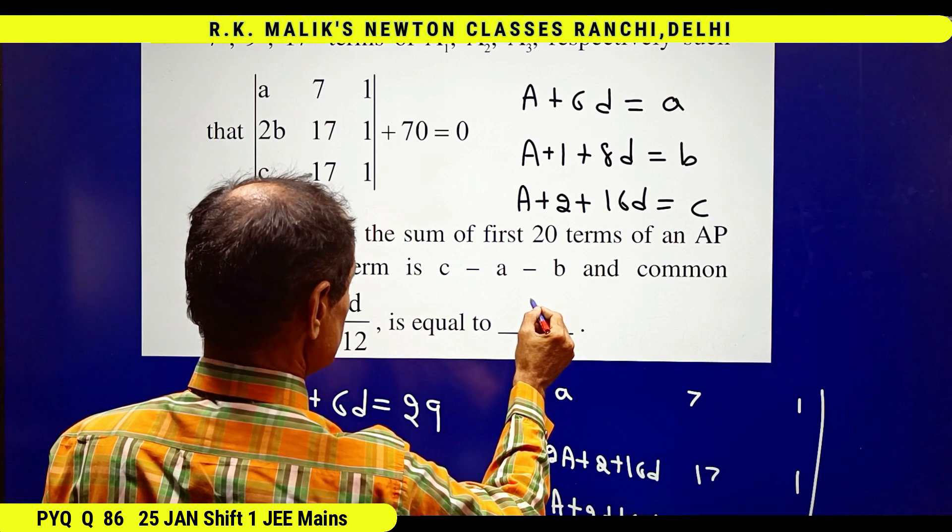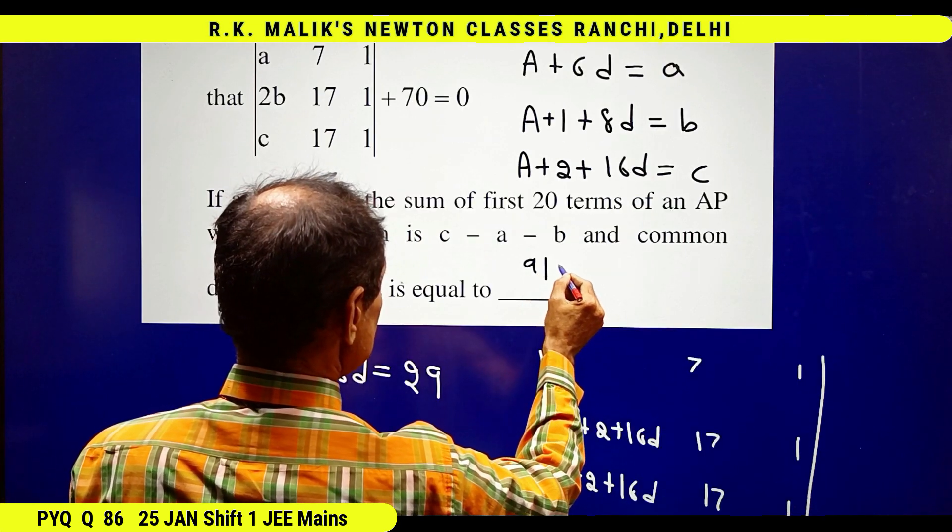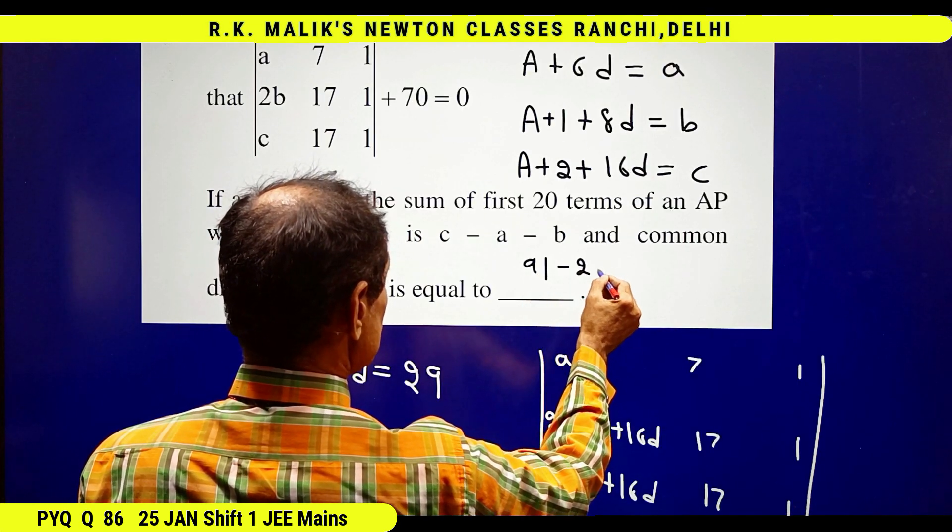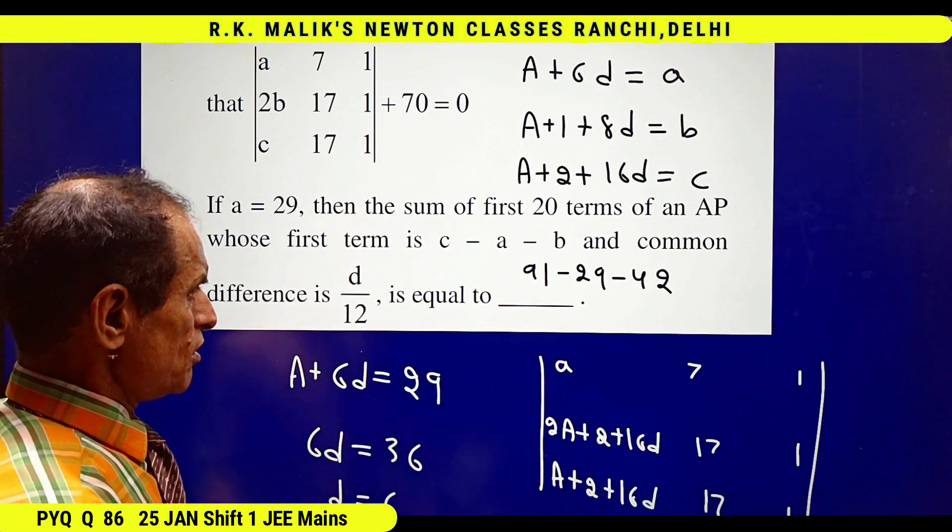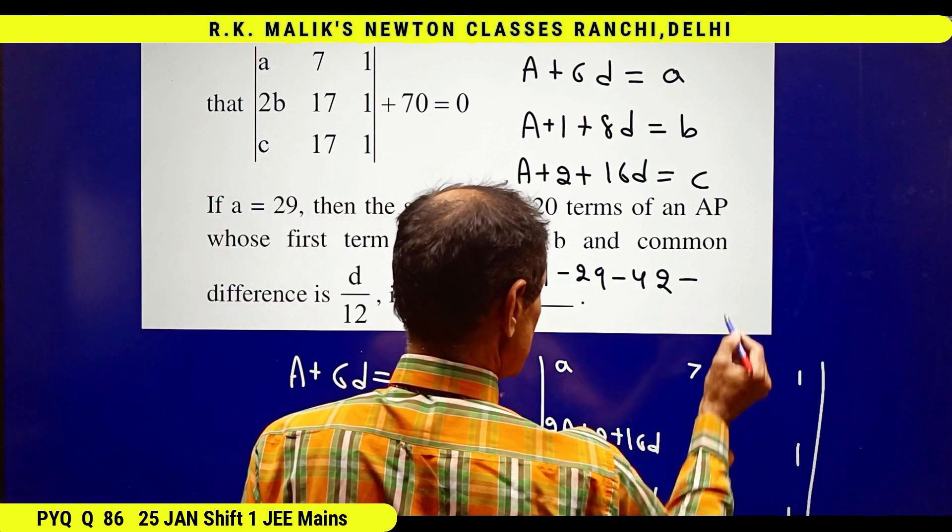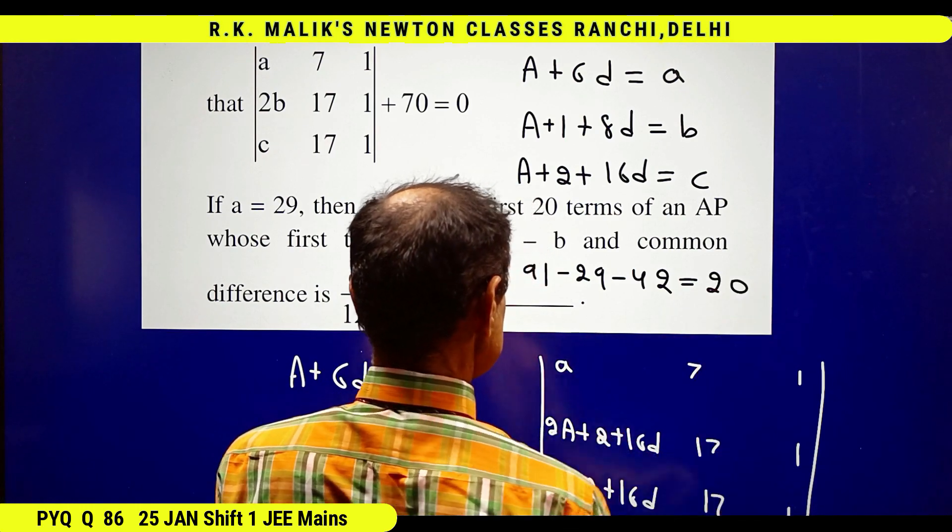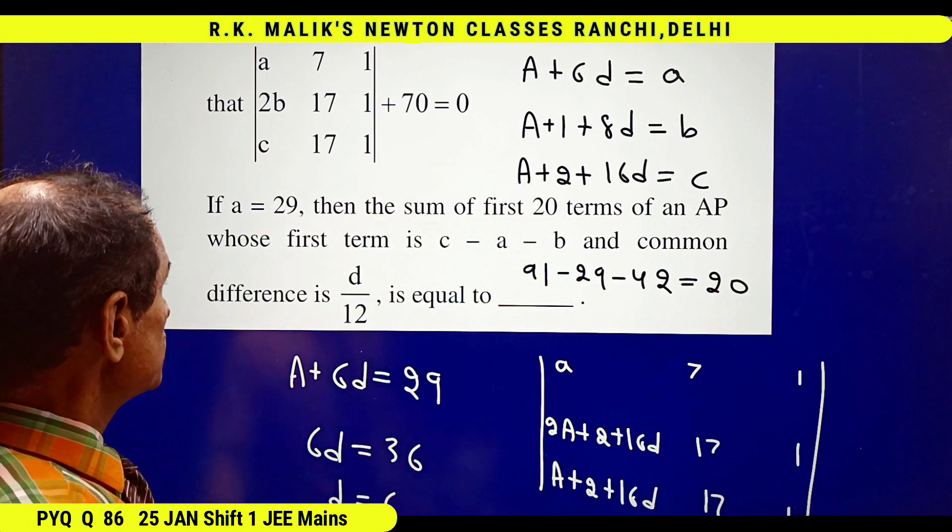Hence the value of c minus a minus b becomes 91 minus 29 minus 42, which equals 20.